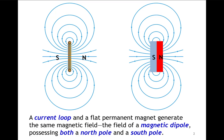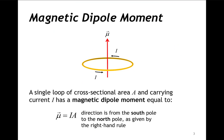What this means is that it generates a magnetic field with a certain orientation that has both a north and a south magnetic pole that can never be separated. For current loops, it's very useful to define a quantity called a magnetic dipole moment.